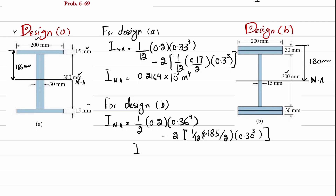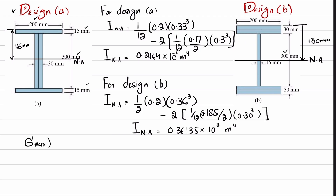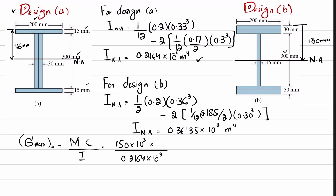Solving this, the moment of inertia for Design B about the neutral axis comes out to be 0.36135 × 10⁻³ m⁴. Now we calculate maximum stress for Design A: σ_A = Mc/I = (150 × 10³) / (0.2164 × 10⁻³) × 0.165 m. This gives σ_A = 114.3 MPa.